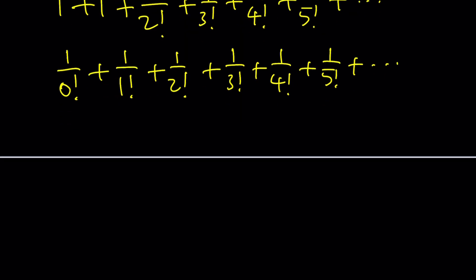This is nice because everything fits the pattern so we can kind of write this using sigma. For example this would be n equals 0 to infinity 1 over n factorial.